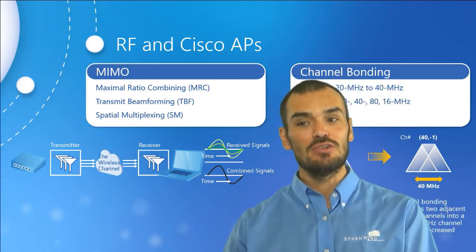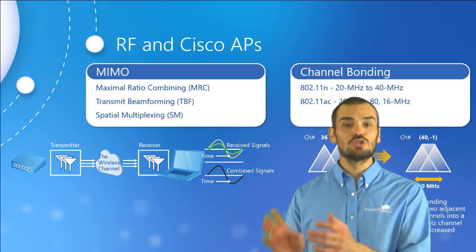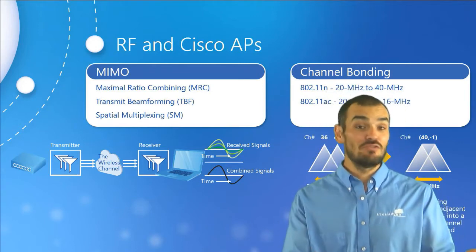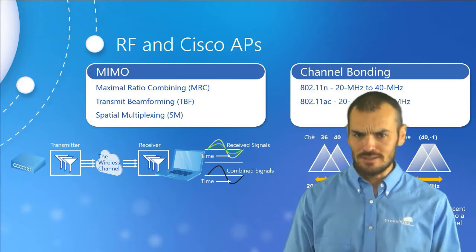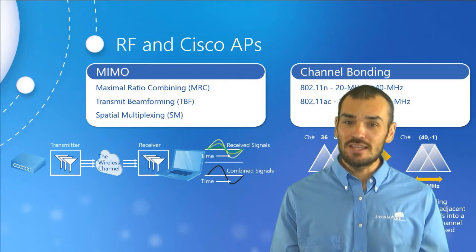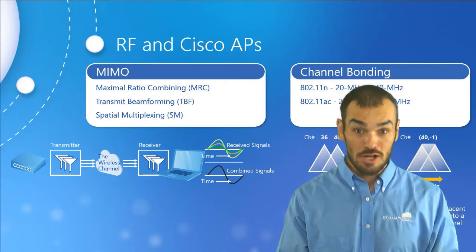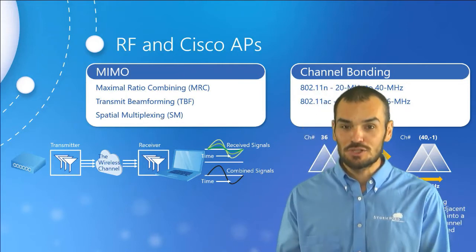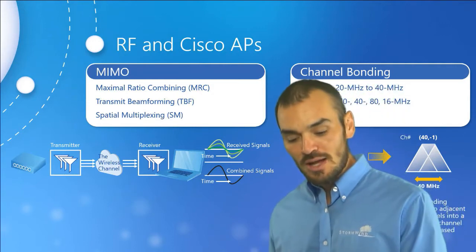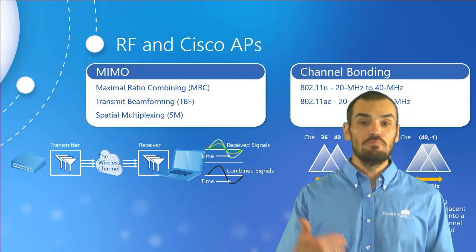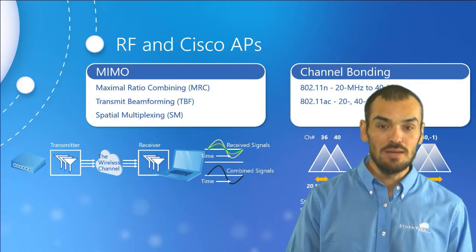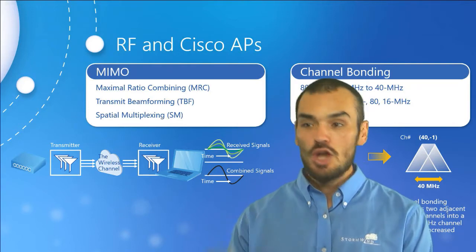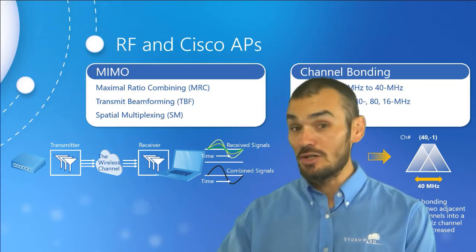We also have spatial multiplexing, which leverages both transmitter and receiver to increase bandwidth. A single stream of data is broken into multiple streams transmitted from different antennas — similar to how a large file is broken into packets in Ethernet. 802.11ac in particular benefited from MU-MIMO (multi-user multiple input, multiple output), giving each client a dedicated spatial stream, eliminating collisions and enabling full duplex — before ac, we were limited to half duplex at best.